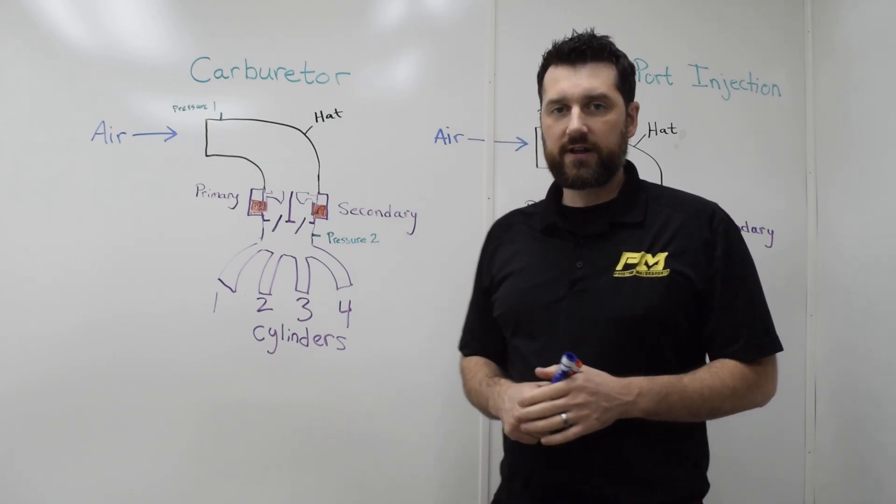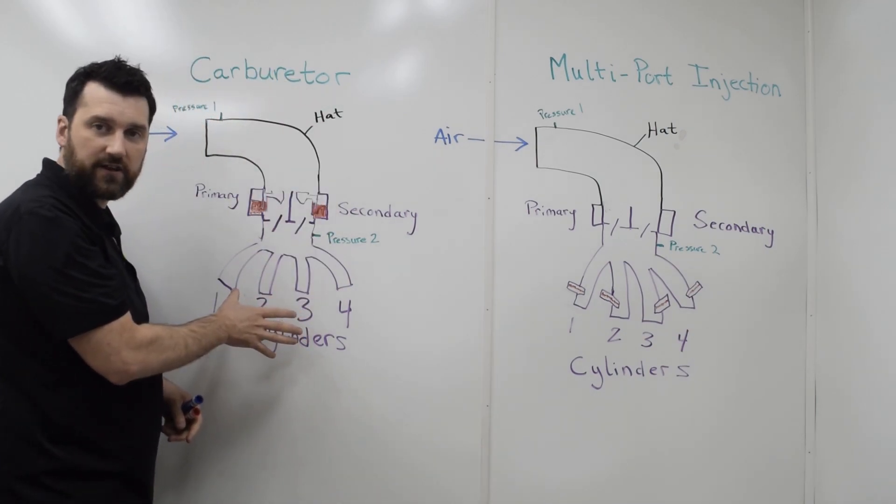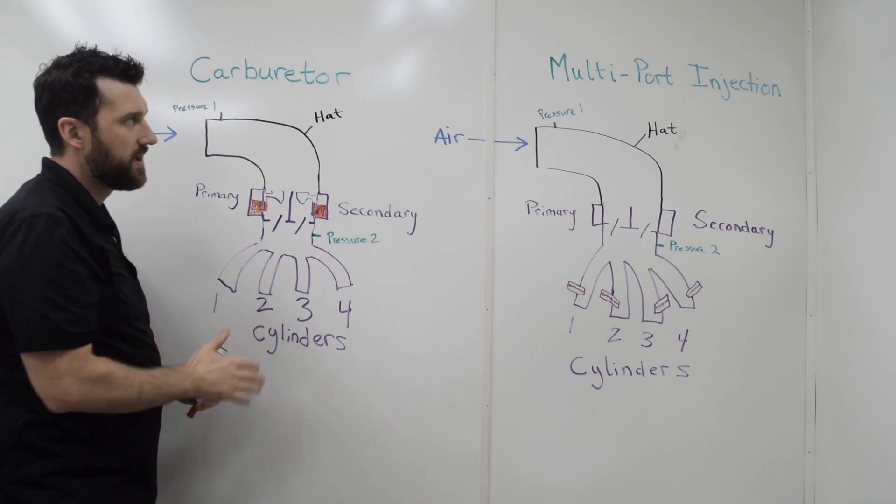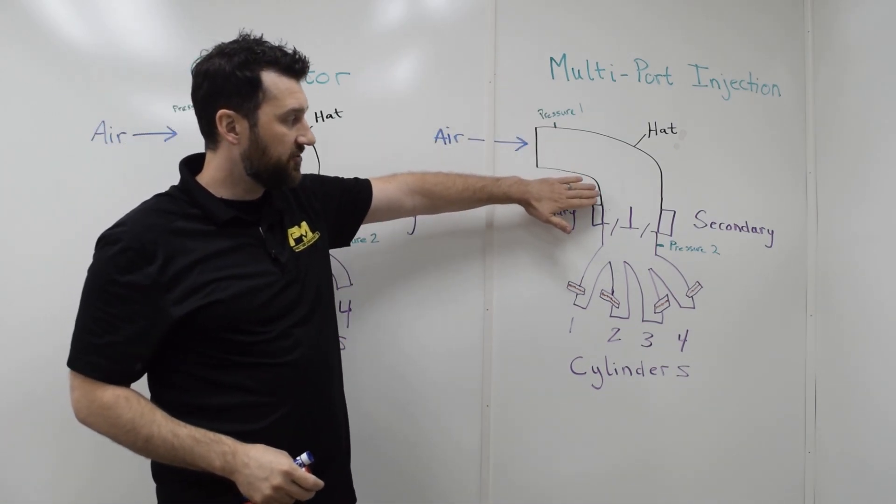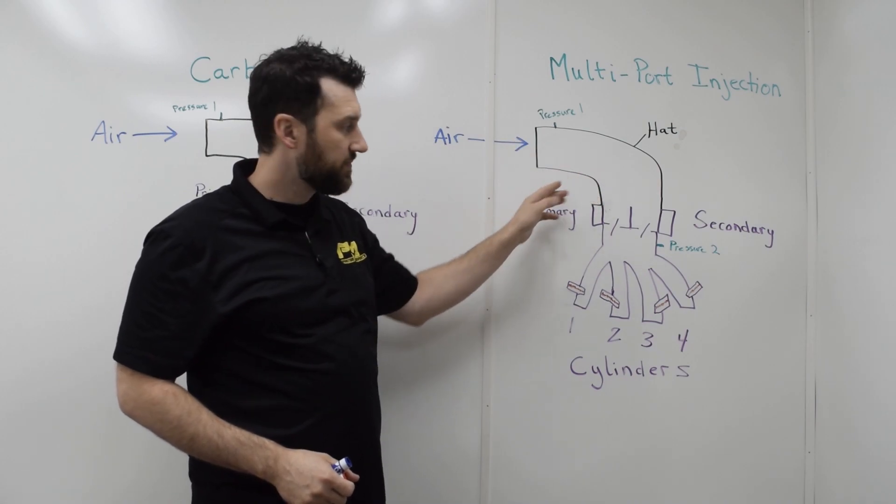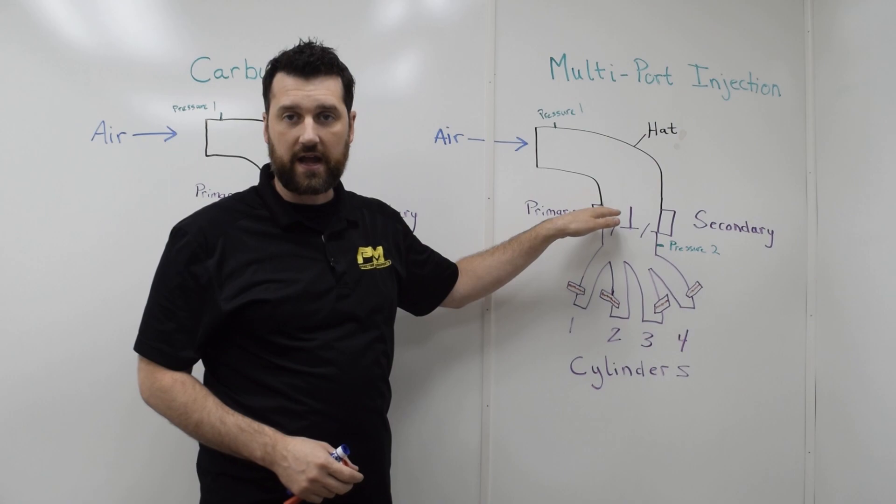What I have here is a couple of quick drawings of a carbureted setup with a blow-through hat and a blow-through carb, and then a multipoint injection system with that same hat, and instead of a carburetor, this is a 4150 style throttle body.